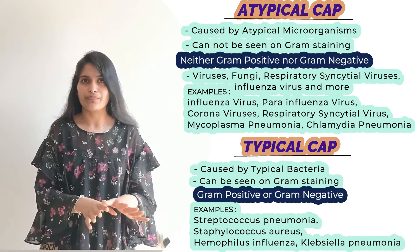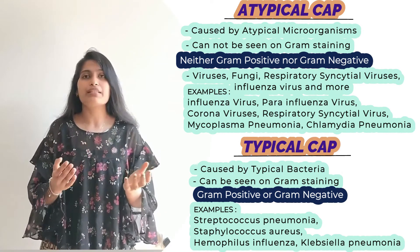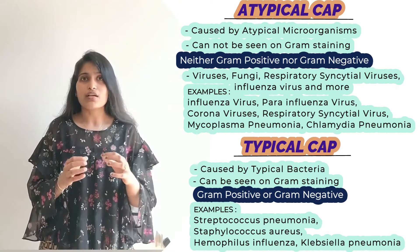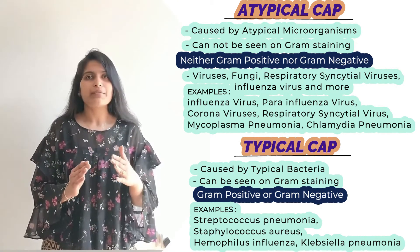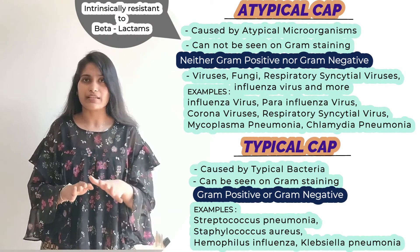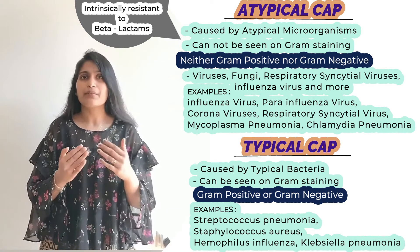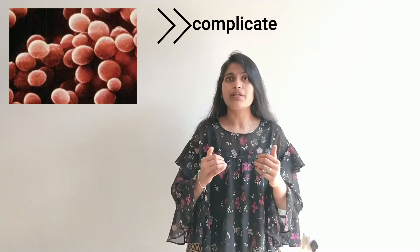This differentiation into atypical CAP and typical CAP is important because the treatment for both differs. Atypical microorganisms are intrinsically resistant to beta-lactams, so whenever prescribing medications for atypical CAP, beta-lactams are avoided. There are some special concerns regarding CAP — among them the first is Staphylococcus aureus pneumonia.